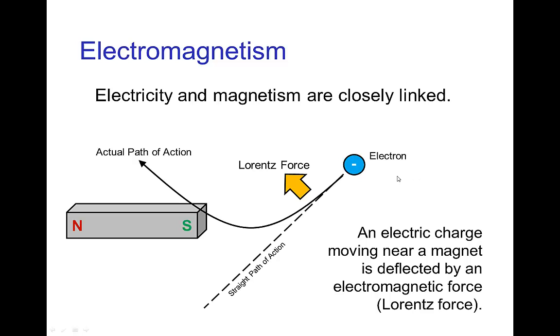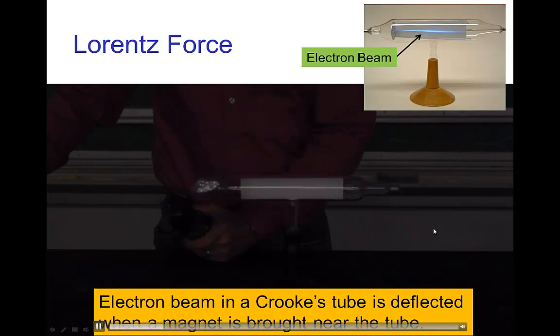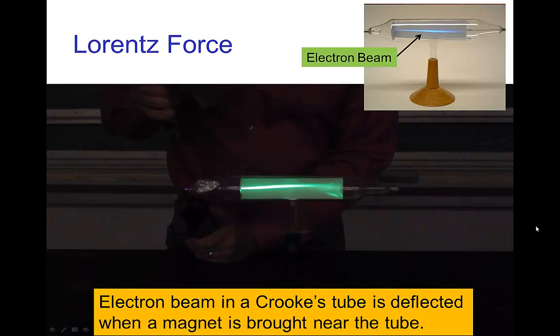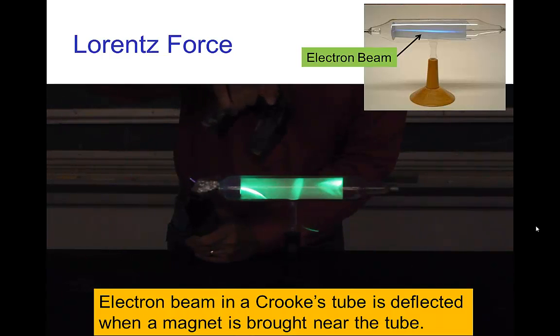Another example of the connection is that if we have an electric charge, say an electron, that is moving near a magnet, there's a force that acts on that moving charge and that will deflect the path of action. Here's an example of this. I'm going to produce an electron beam in this crooks tube, so you see that electron beam. And now I'm going to take this magnet, the big horseshoe magnet, and you see how the beam gets deflected in all different directions by the magnet.